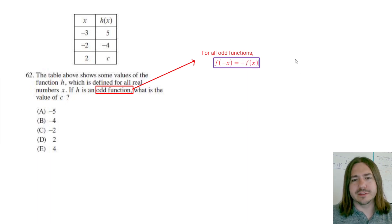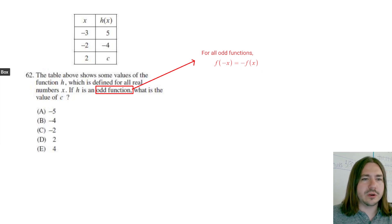What this means is that if you have a negative x value - in this case, we know what f(-2) is. f(-2) equals -4.